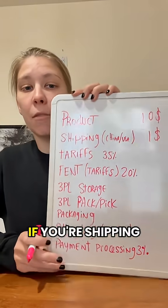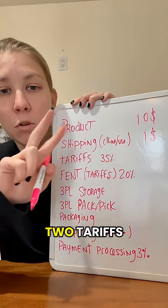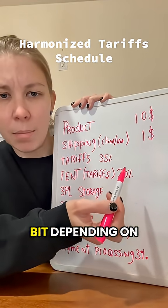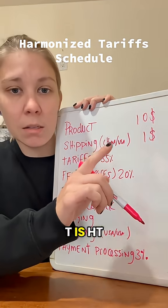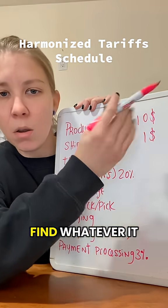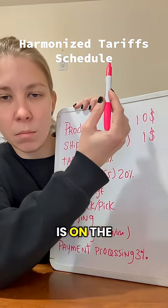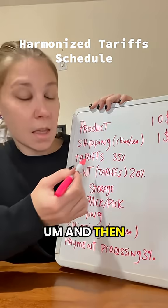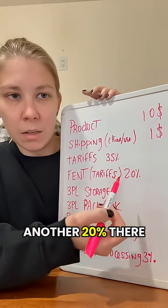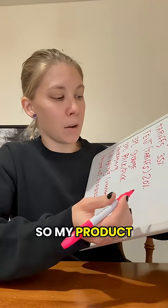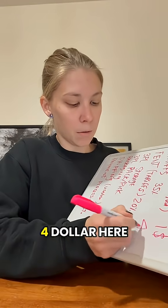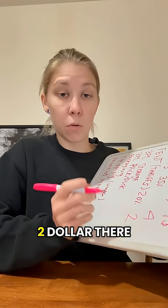Tariffs. If you're shipping from China to the US, you have two tariffs. You have the regular tariffs, which might vary depending on what your HST code is — you can find whatever your HST is on the link. And then there's the fentanyl tax, which is another 20% tariff. So on a $10 product, we're looking at $4 for regular tariffs and $2 for the fentanyl tax.